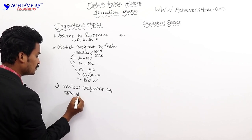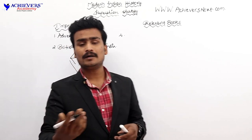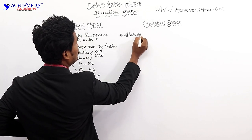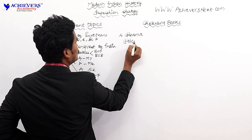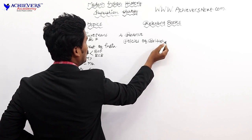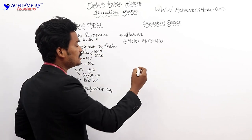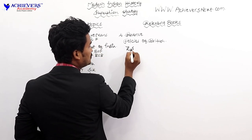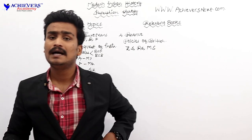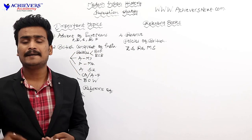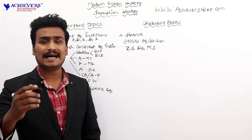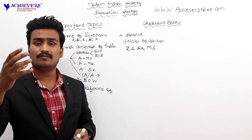Number four is the Revenue Policies of British. Under this, the British introduced three main systems in India: the Zamindari system, the Ryotwari system, and the Mahalwari system. We need to study the taxation in these systems, the personalities who introduced them, and the areas in which they were implemented.